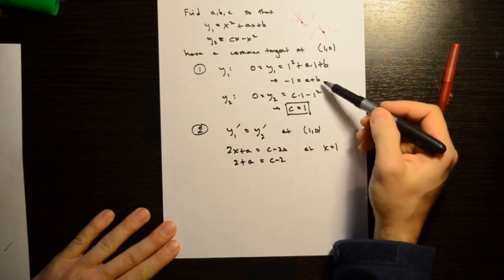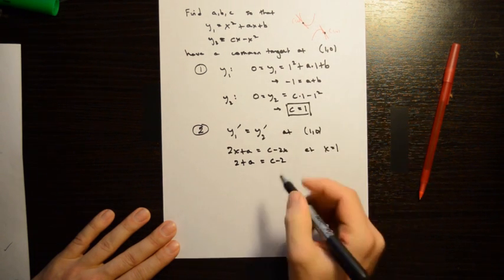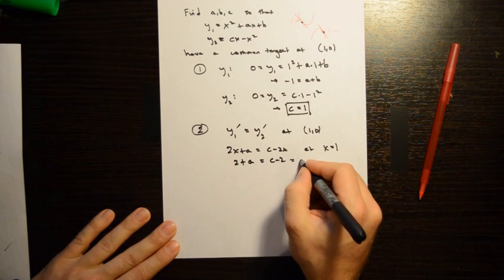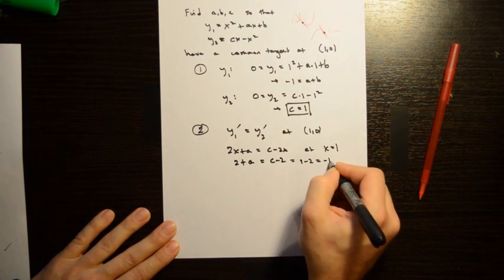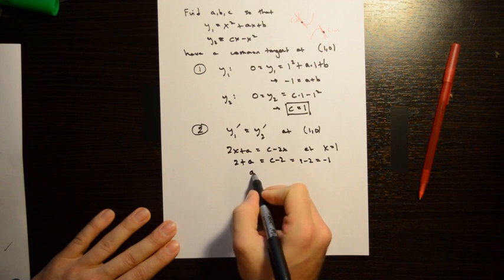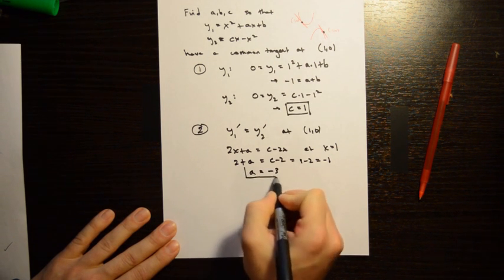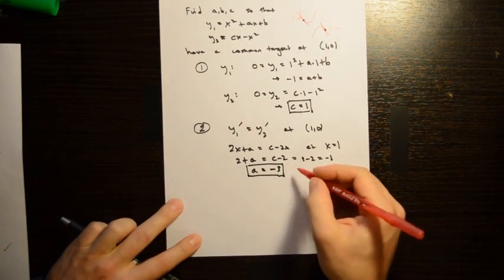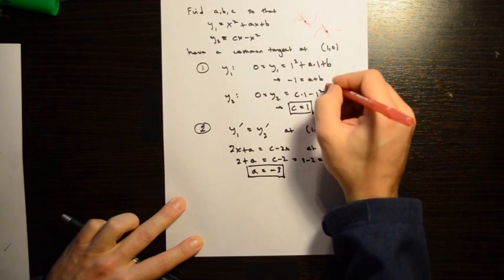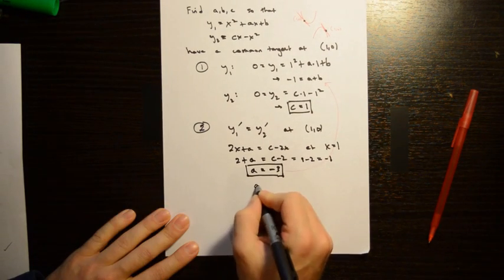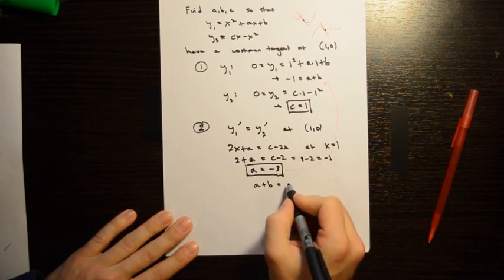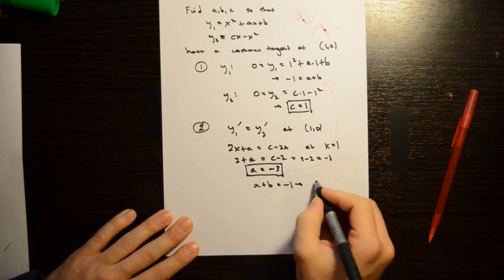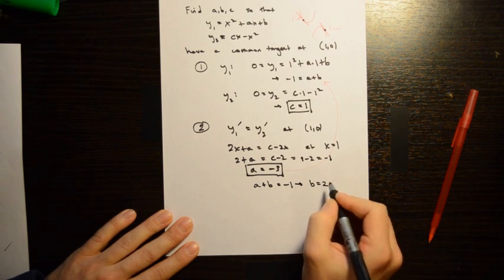Combining c = 1 with the equation 2 + a = c - 2, we get 2 + a = 1 - 2, so a = -3. Then plugging a into the relationship a + b = -1, we get -3 + b = -1, so b = 2.